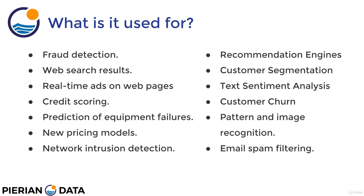Machine learning is used in a wide variety of topics and use cases — everything from fraud detection to web search results to credit scoring. If you're applying for a mortgage, machine learning is happening behind the scenes to assess creditworthiness. If you travel abroad and your credit card flags a possible fraud, that's also machine learning at work. There are recommendation engines on platforms like Amazon or streaming services suggesting new movies and TV shows, and email spam filtering using natural language processing. And then there's pattern and image recognition.